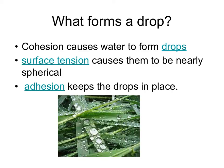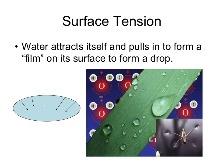Adhesion is water, being a polar molecule, sticking to other substances. Water forms drops because of cohesion — we call that surface tension — and that surface tension is why some insects can actually walk on water, because water sticks to itself.